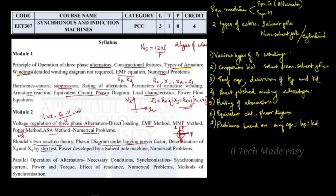In the second module, we will also discuss the power developed by a salient pole machine — that is, how much power is developed — and derive the corresponding equation.